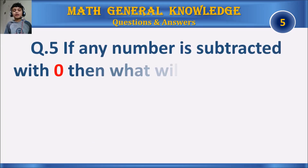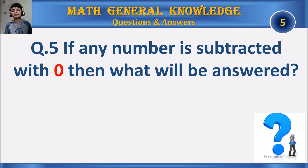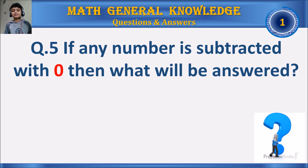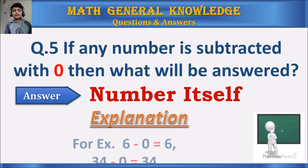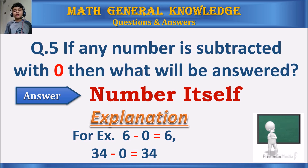Question 5: If any number is subtracted with 0, then what will be the answer? Your time starts. The answer is the number itself. For example, 6 minus 0 equals 6, 34 minus 0 equals 34, and so on.